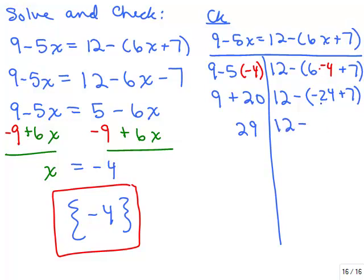So I like to use a different method when checking. We have 6 times negative 4, which is negative 24, plus 7. Simplifying inside the parentheses, negative 24 plus 7 is negative 17. Then 12 minus negative 17 is 12 plus 17, which is 29.